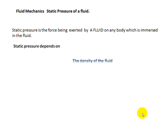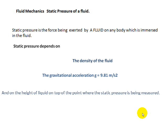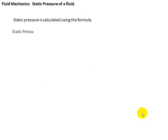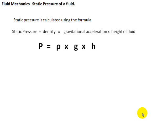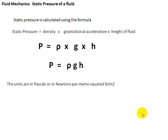Static pressure depends on the density of the fluid, the gravitational acceleration g which is 9.81 meters per second squared, and on the height of the fluid above the point in consideration. Static pressure is calculated using the formula: pressure equals density of the fluid multiplied by the gravitational acceleration multiplied by the height of the fluid above the point in consideration. Static pressure equals ρgh.